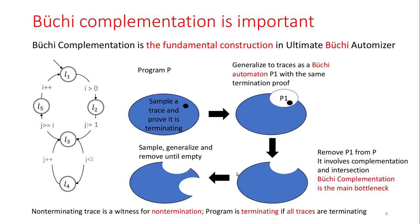Of course, sometimes we cannot decide the termination of a trace because termination is undecidable in general. Here, removing all terminating traces from the program reduces to Büchi complementation and intersection. Intersection is easy, but complementation is the main bottleneck of the approach because complementation is very hard for Büchi Automata.